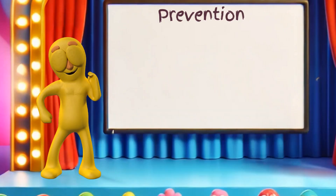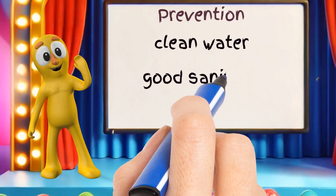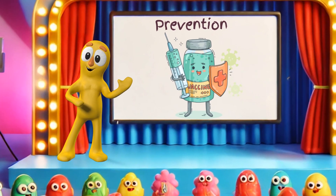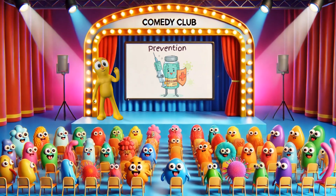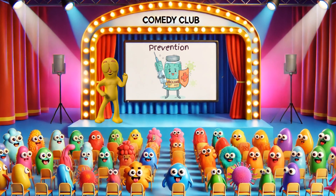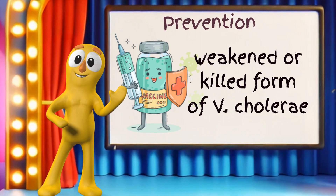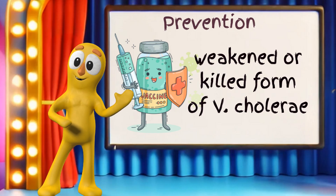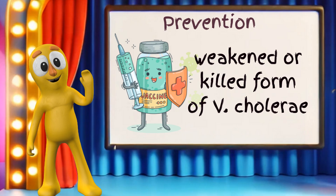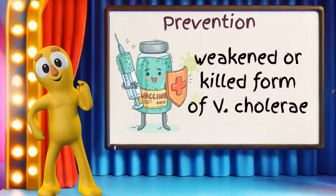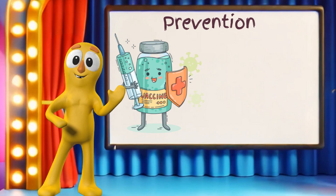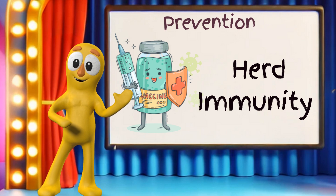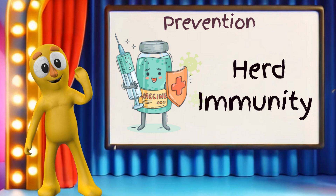Preventing cholera outbreaks involves providing clean water, good sanitation, and vaccination campaigns. The cholera vaccine is a powerful tool in this fight. It helps the body develop immunity against cholera, reducing the severity and spread of the disease. The cholera vaccine works by introducing a weakened or killed form of Vibrio cholerae into the body — this doesn't cause the disease, but it stimulates the immune system to produce antibodies against cholera. These antibodies stay in the body, ready to fight off the real bacteria if it tries to invade. Vaccination not only protects individuals but also helps create herd immunity, making it harder for cholera to spread in the community. It's a key part of public health strategies to control and prevent cholera outbreaks.